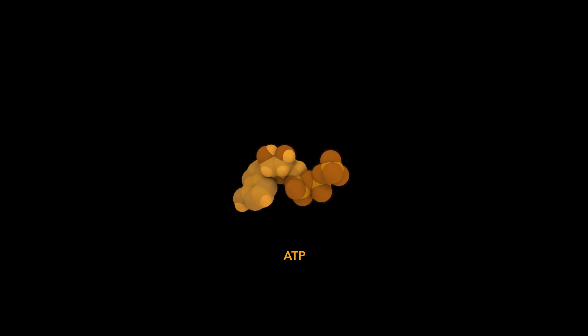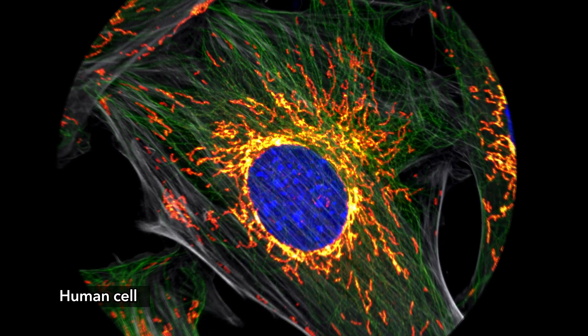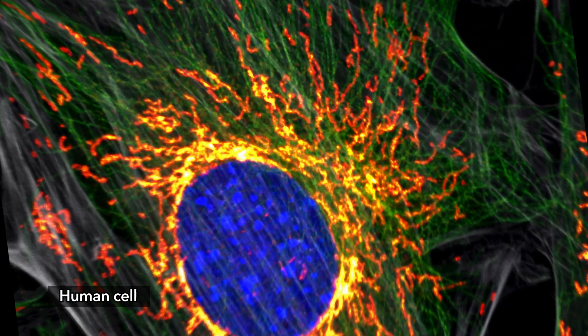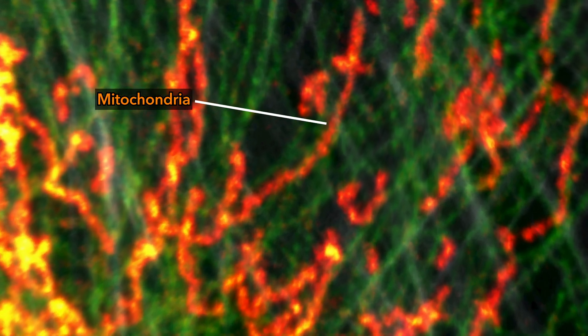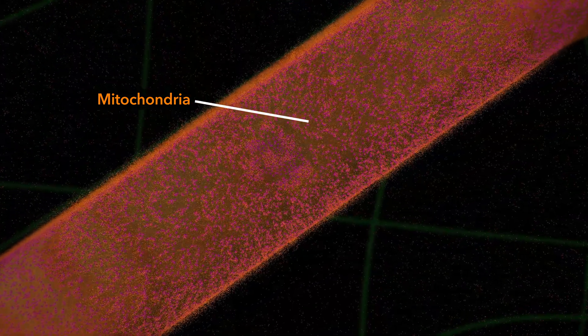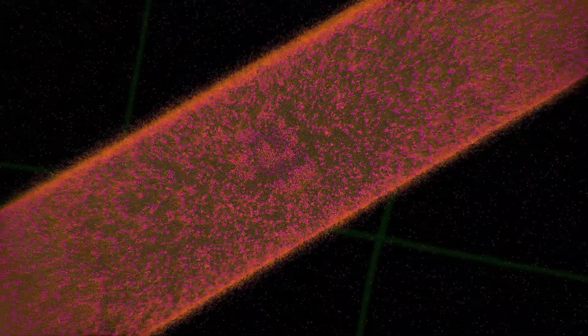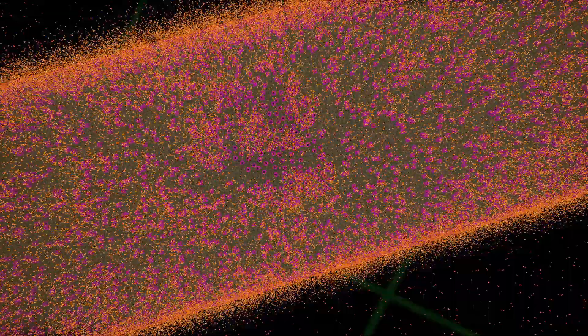The glycolysis pathway requires energy to begin, delivered by chemical fuel, ATP. The primary source of ATP in your cells are mitochondria organelles. Deep inside mitochondria, chemical reactions of aerobic respiration consume oxygen from the air you breathe to generate vast amounts of ATP.